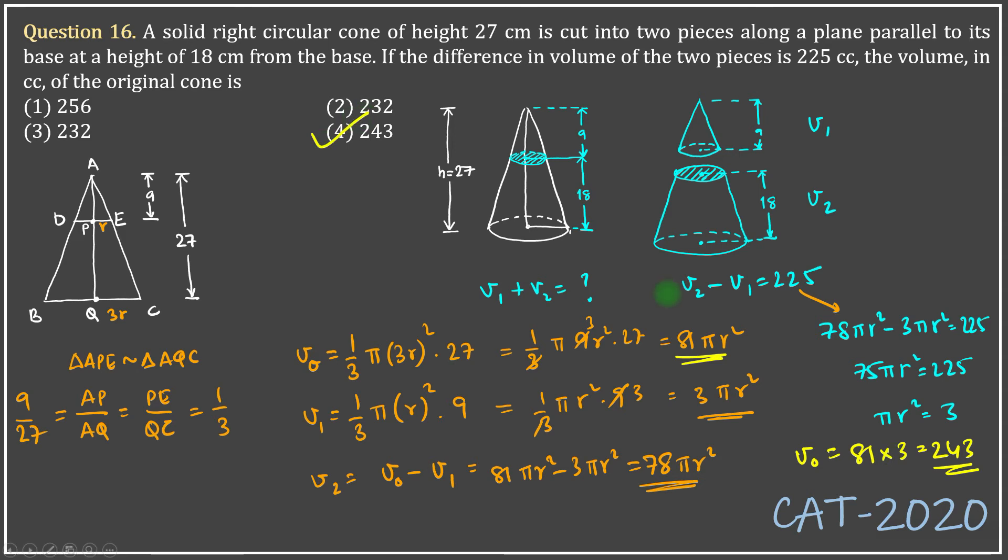However, we could have solved the same question with a lot of ease if you just noted that the volume of the smaller cone will be 1/27th of the volume of the larger cone. Why do I say that? That's because the height is one third of the larger cone. Because one dimension, height of the smaller cone, is one third of height of the larger cone, so radius will also bear the same ratio. Radius of smaller cone and radius of larger cone will also be 1 by 3.